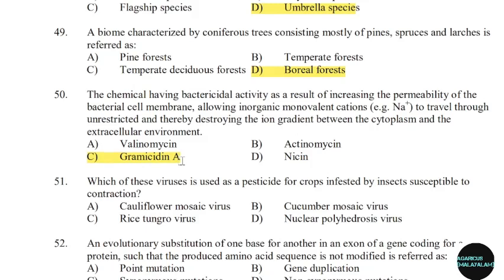51st question: Which of these viruses is used as a pesticide for crops infested by susceptible insects? Correct answer: Option D — Nuclear polyhedrosis virus.